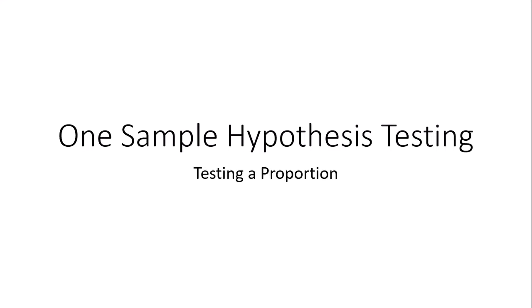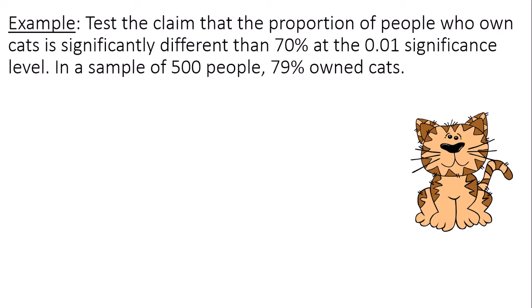This is a video on one-sample hypothesis testing, testing a proportion. Test the claim that the proportion of people who own cats is significantly different than 70% at the 0.01 significance level. In a sample of 500 people it was discovered that 79% owned cats.